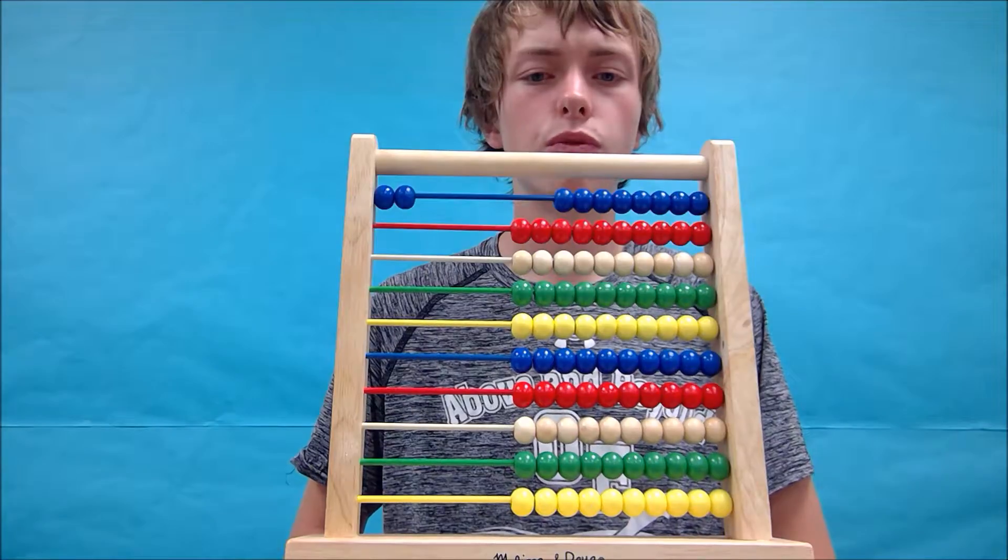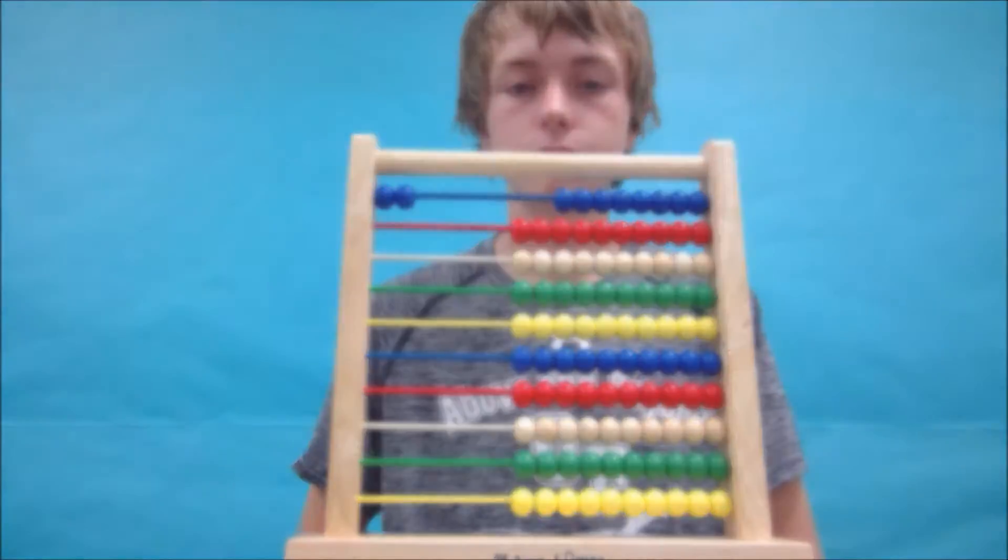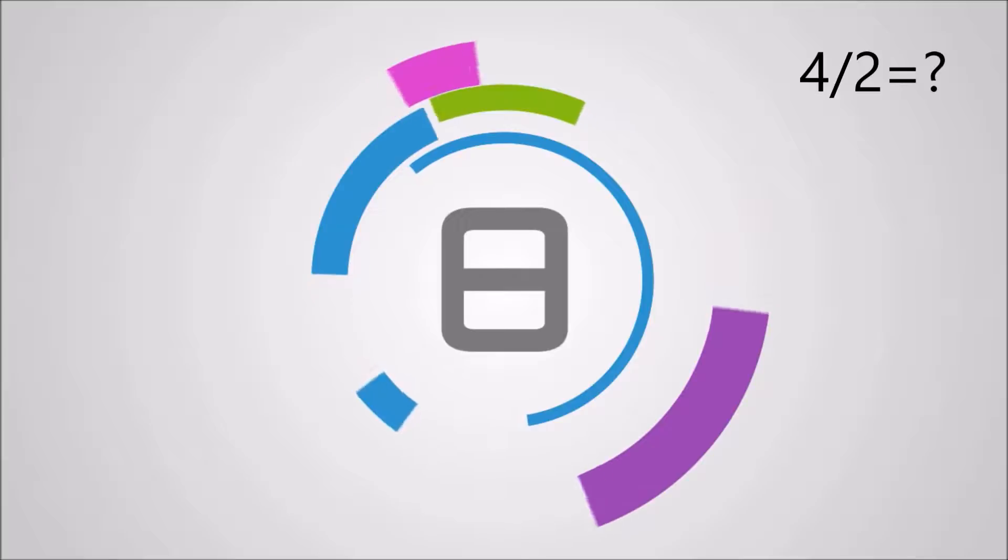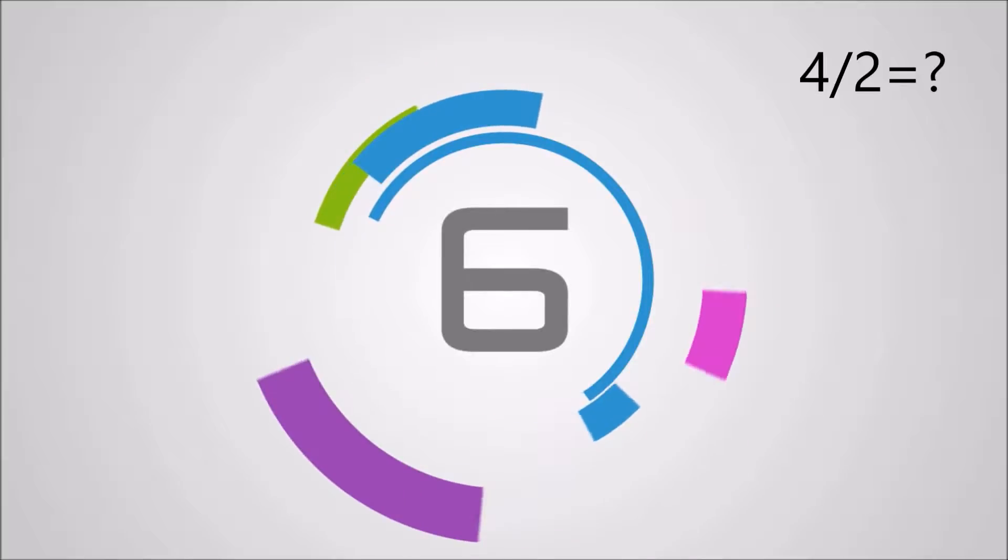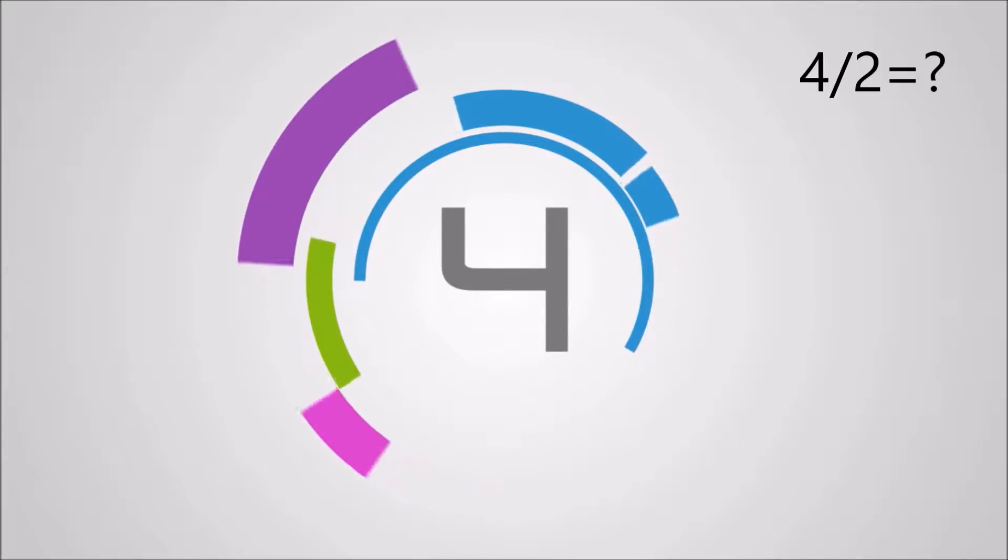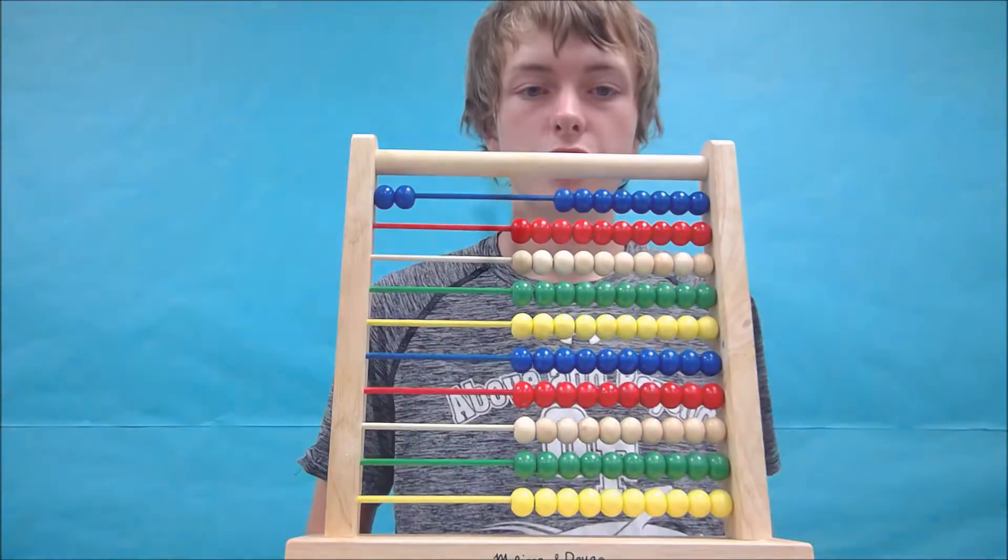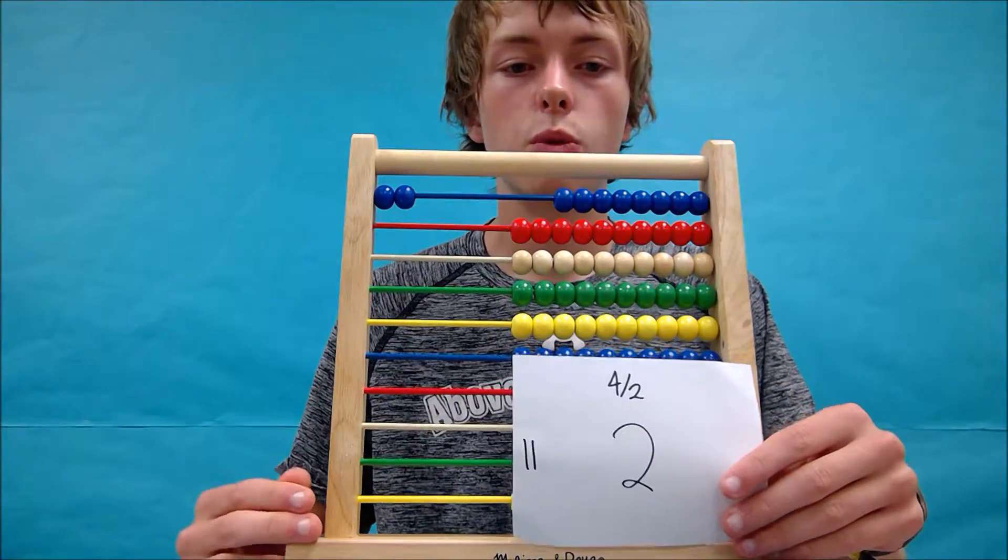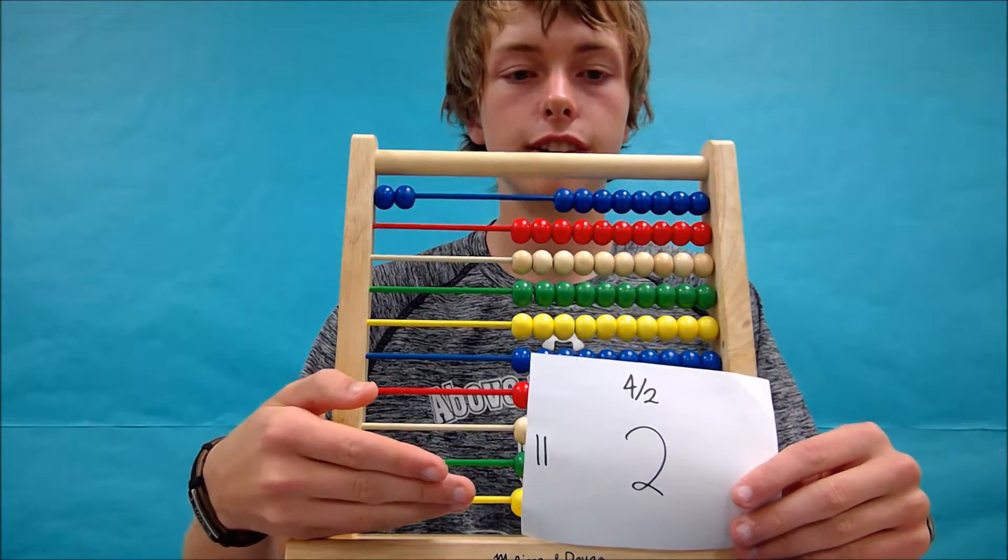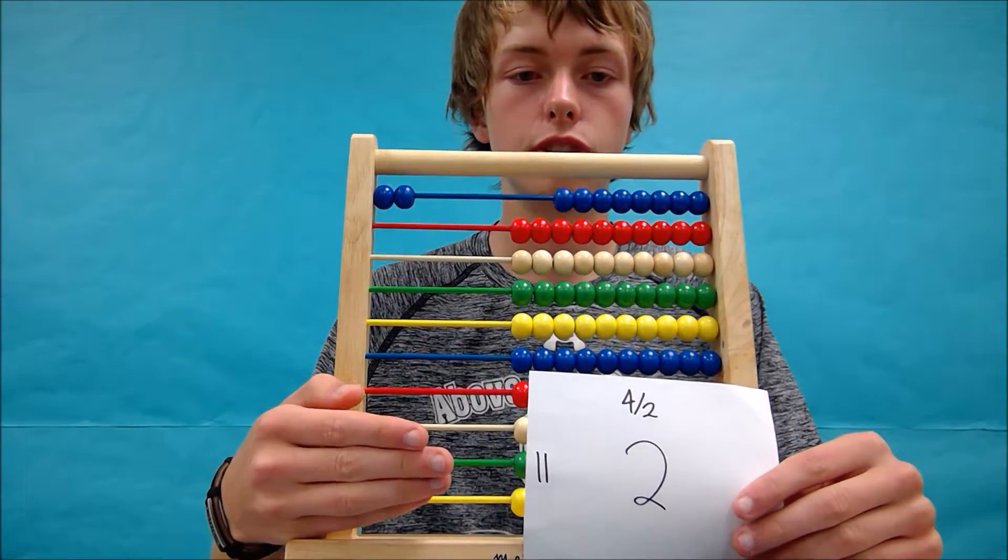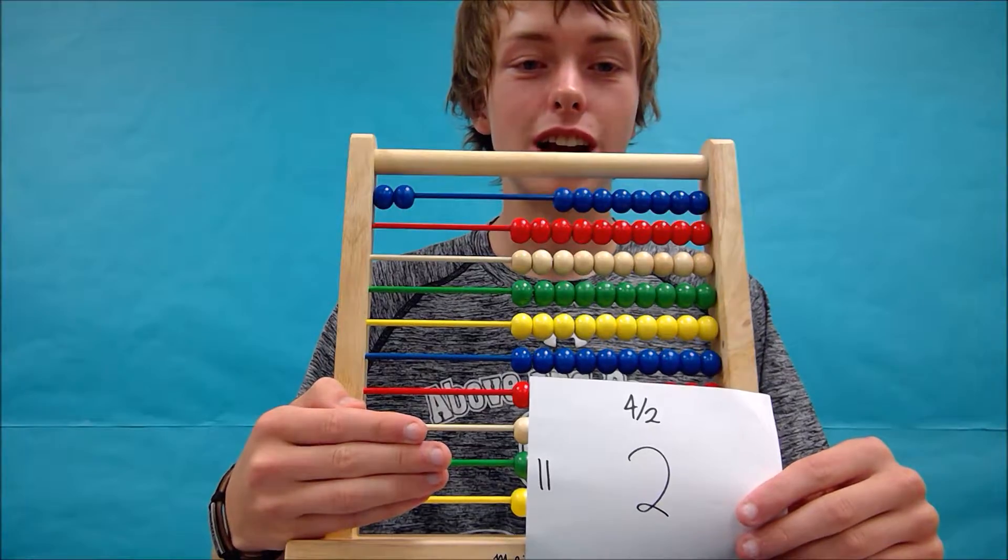Let's start with 4 divided by 2. Your answer should be 2. Whether you used your abacus or your tallies, it doesn't matter. But it should end up being 2. Did you get it? Great job.